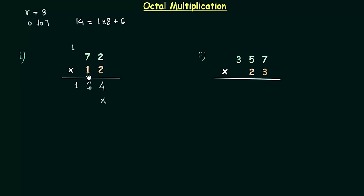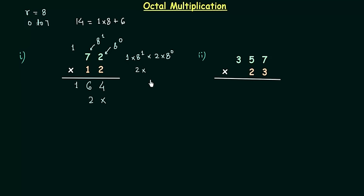Now I will multiply 72 by 1. 1 multiplied by 2 is 2. We are writing our results from this position because the weight of this position is 8 raised to power 0, and the weight of the next position is 8 raised to power 1. When you multiply this 1 by 2, we have 1 multiplied by 8 raised to power 1, multiplied by 2 multiplied by 8 raised to power 0. So this result goes to the column having weight 8 raised to power 1, and we start writing results from that column. 1 multiplied by 7 is 7, and 7 is definitely an octal number.